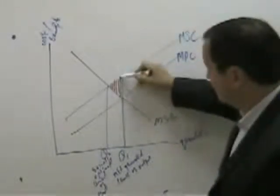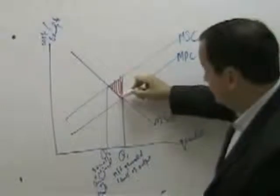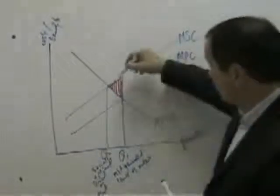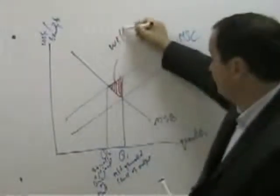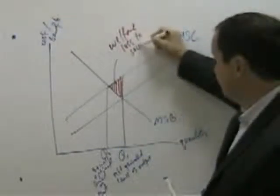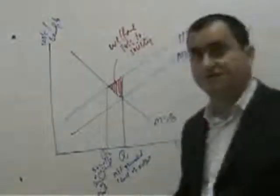So all of this area is the overproduction caused by the failure of the market mechanism, and you can label this the welfare loss to society. It is the cost of the market failure.